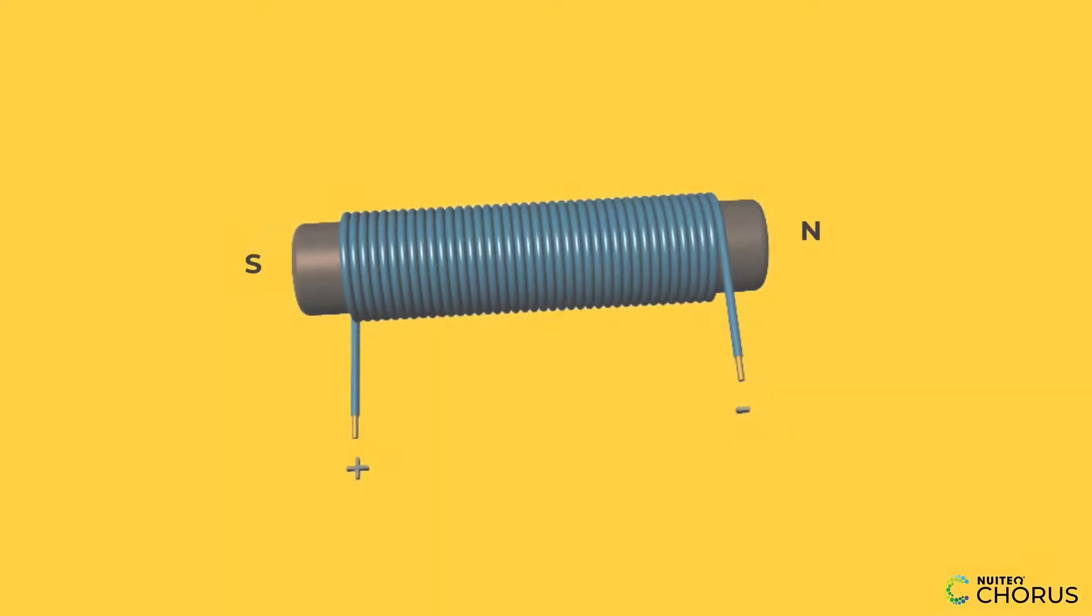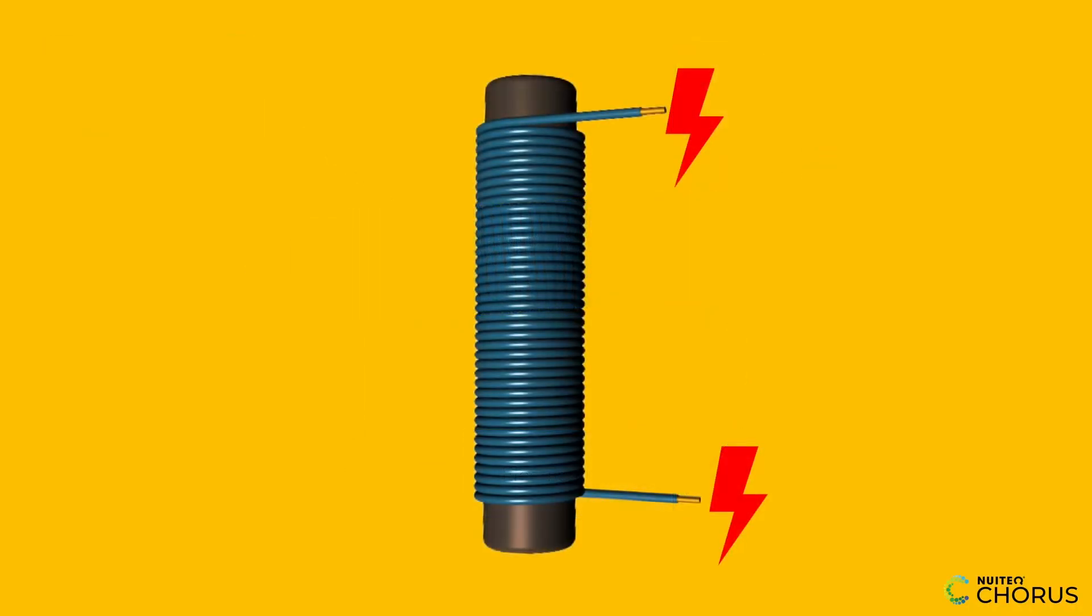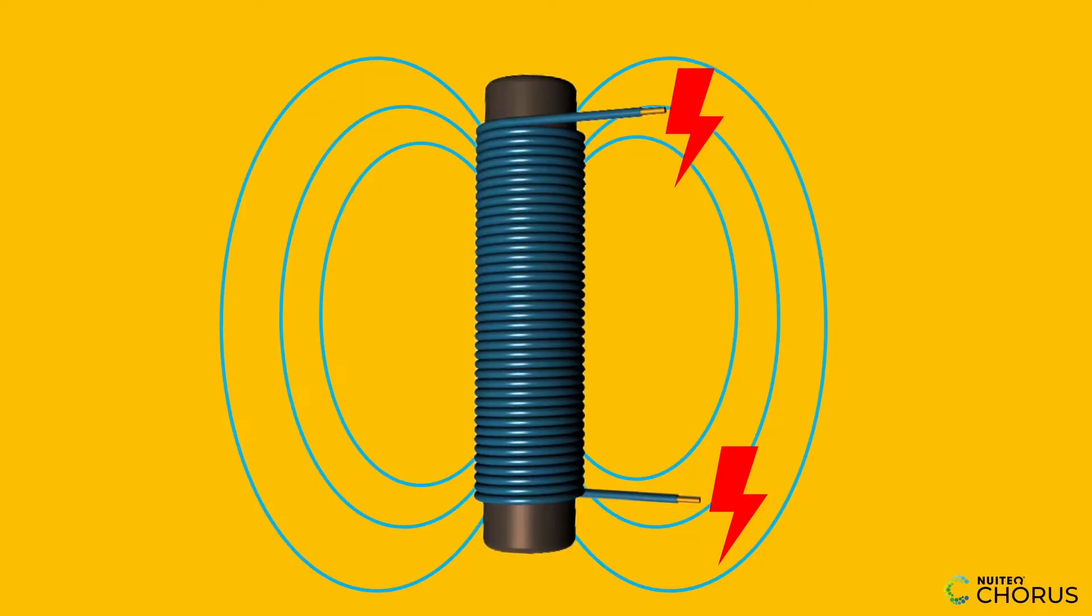An electromagnet is a type of magnet where the magnetic field is created by electricity. It has three main parts: a coil of wire, usually made of copper, an iron core, and an electric current. When electricity flows through the wire, it creates a magnetic field around the core, turning it into a magnet.